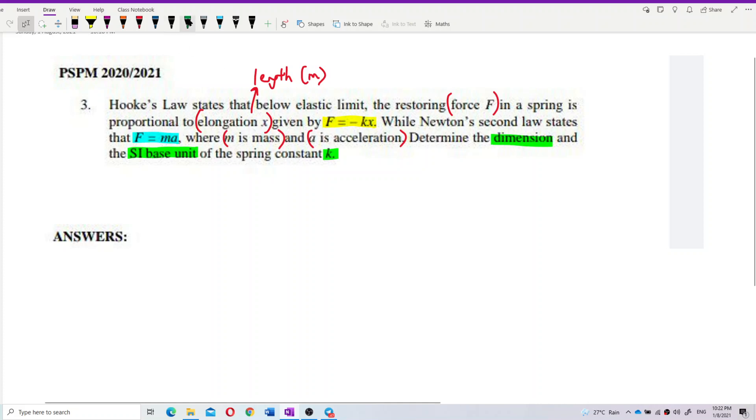We have two formulas. Let's write it out. We have F equal to negative kx and F equal to ma. We want to know what is the dimension and unit for k. This is our target. So how to find the dimension of k? What we can do is, we know that dimension of F will be equal to dimension of negative kx. Similarly, dimension of F equal to dimension of ma.